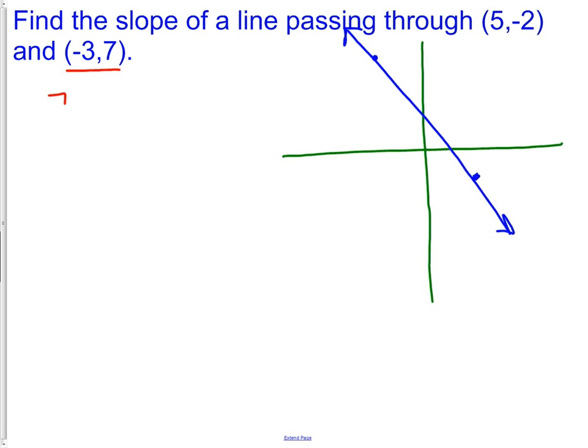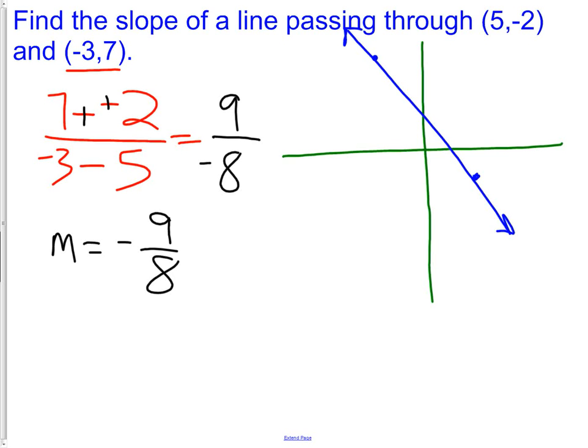Therefore, I will do 7 minus negative 2 over negative 3 minus 5. Doing this, I will get 9 over negative 3 minus 5 would be negative 8. So our m, which is our slope, is negative 9 eighths.